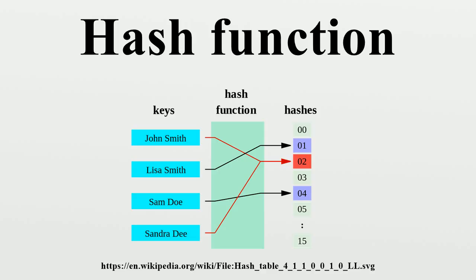Determinism. A hash procedure must be deterministic, meaning that for a given input value it must always generate the same hash value. In other words, it must be a function of the data to be hashed, in the mathematical sense of the term. This requirement excludes hash functions that depend on external variable parameters, such as pseudo random number generators or the time of day.